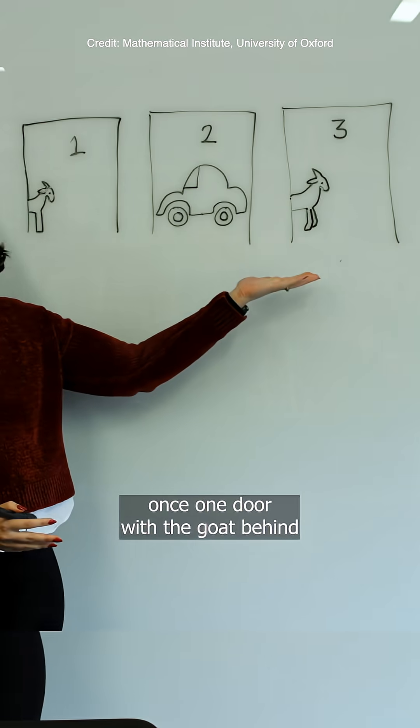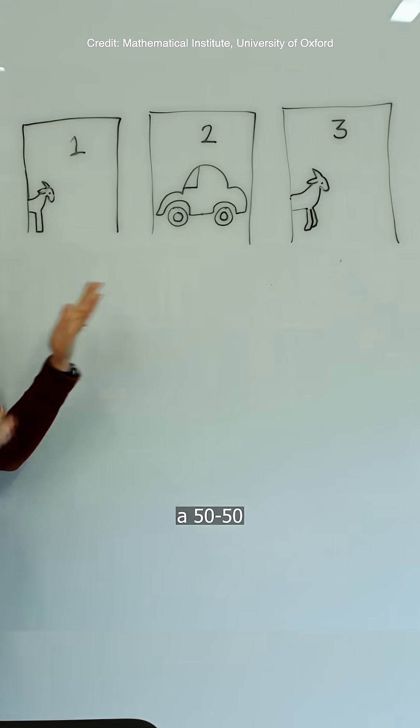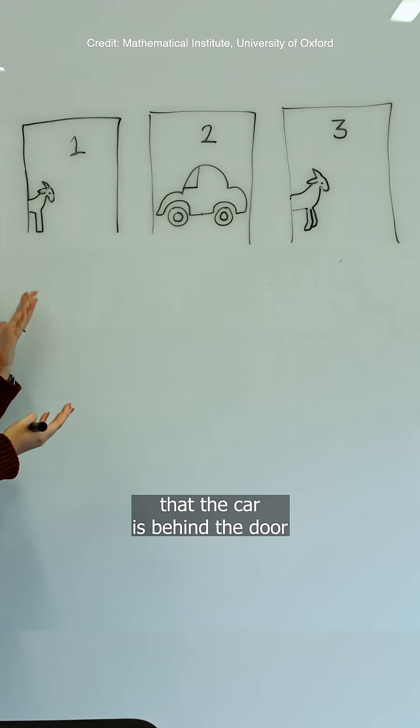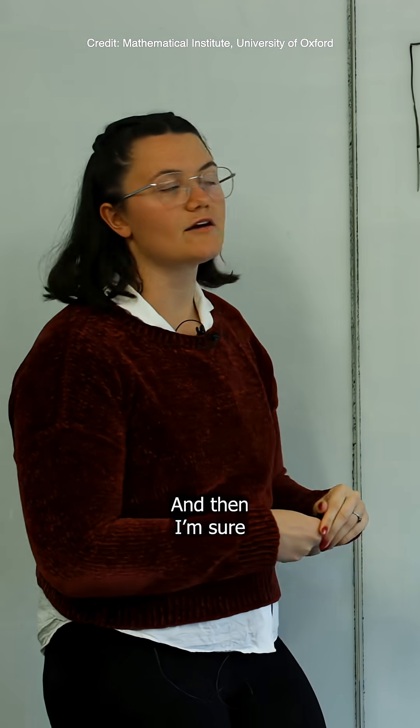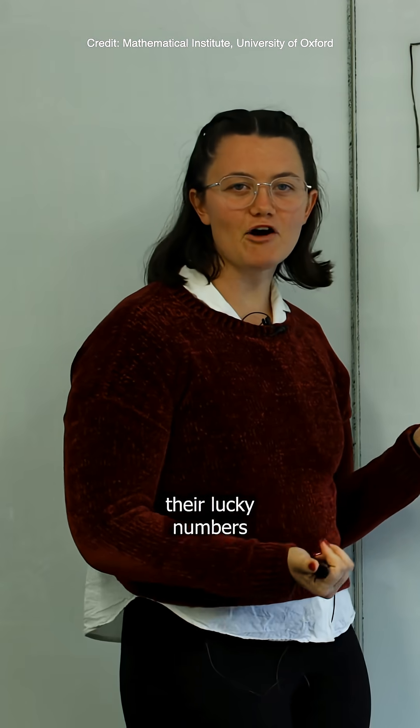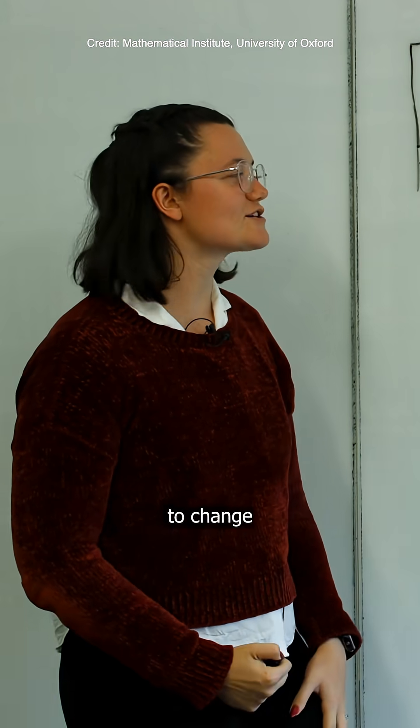Once one door with the goat behind it is taken out of the question, people assume that there's a 50-50 chance that the car is behind the door they've already chosen. Psychologically, people have their lucky numbers or they're stubborn and they don't want to change given the choice.